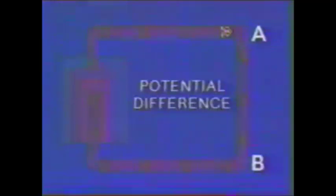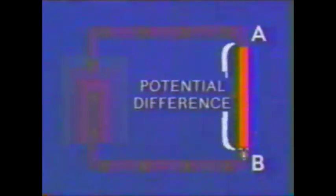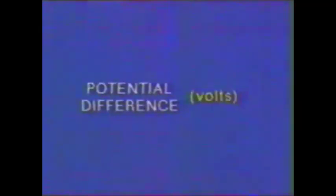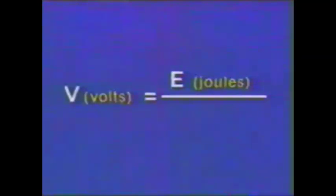Now, consider one coulomb of charge. The amount of electrical potential energy this coulomb loses as it flows through the element from A to B is significant. The potential difference is the amount of potential energy lost by each coulomb of charge between A and B, often stated as the potential difference across AB. Potential difference is measured in volts and is given the symbol V. Potential difference is equal to the energy in joules transferred by each coulomb of charge.